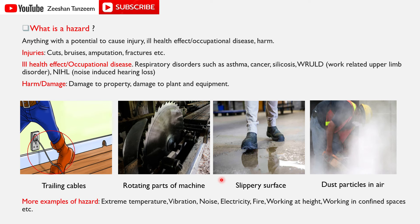Extreme temperature — अगर temperature बहुत ज़्यादा है तो workers को excessive sweating, fatigue, dehydration, heat stress, heat stroke हो सकता है। Very low temperature में worker को hypothermia, cold burn injuries हो सकती हैं। इसके अलावा vibration की वजह से WRULD — work related upper limb disorders — होते हैं, जिसमें numbness और tingling sensation हो सकता है।